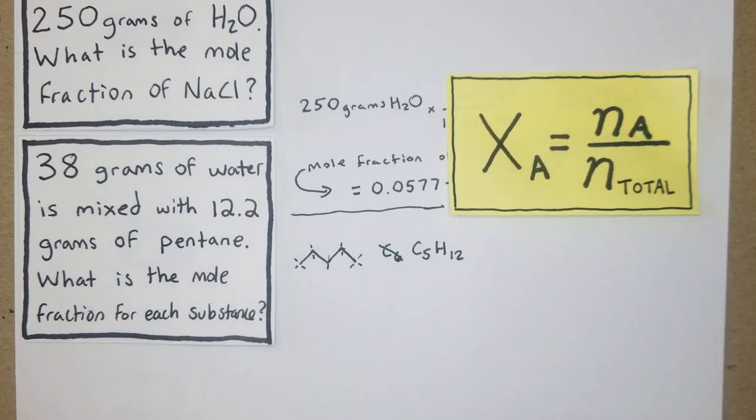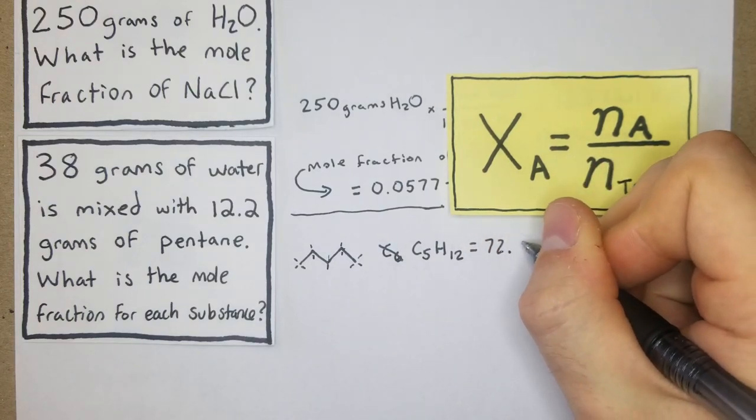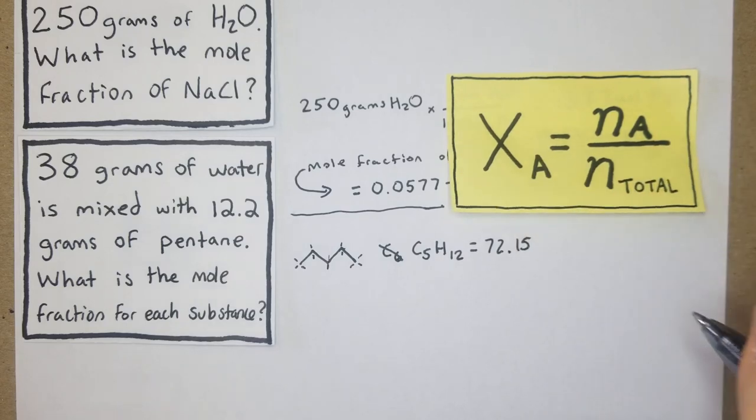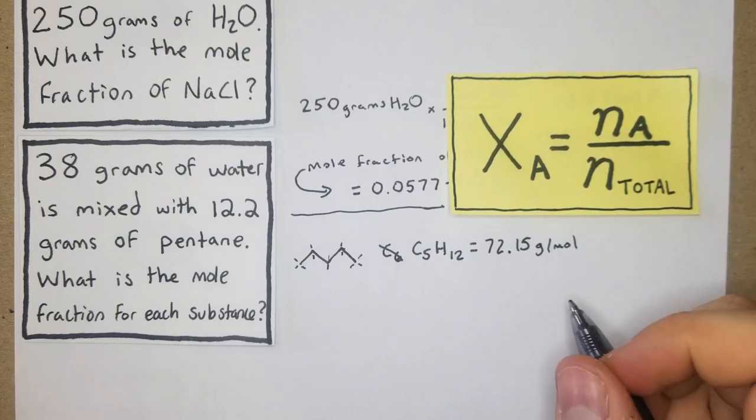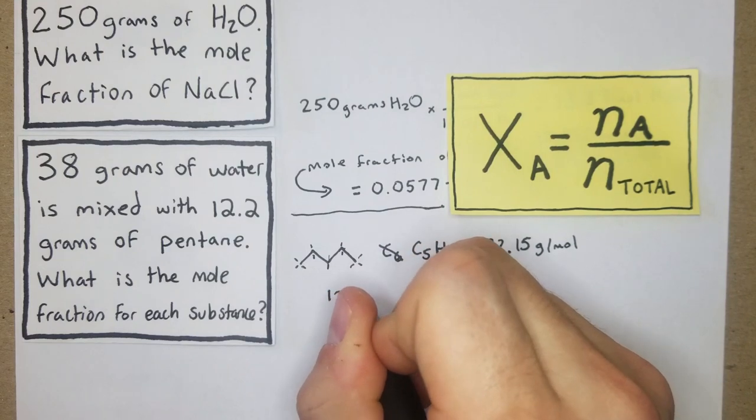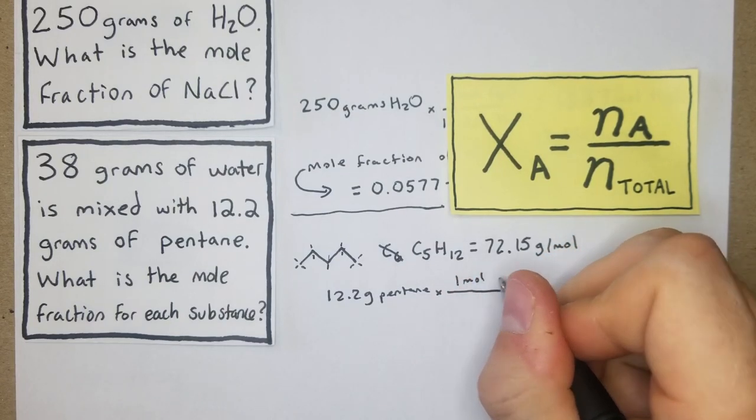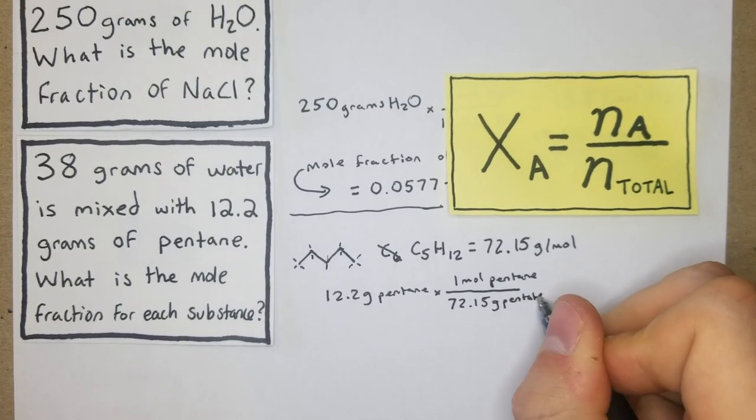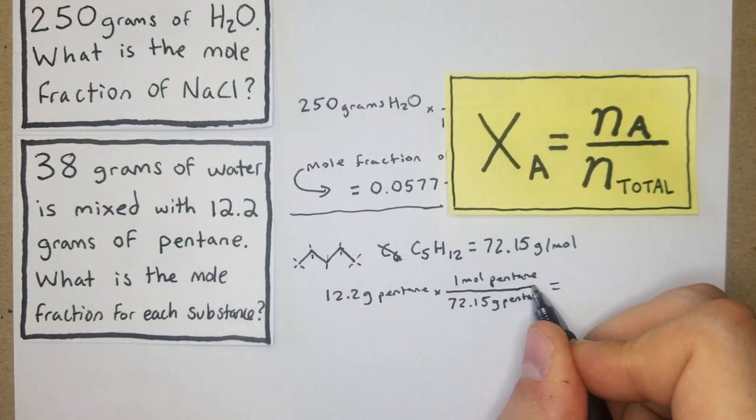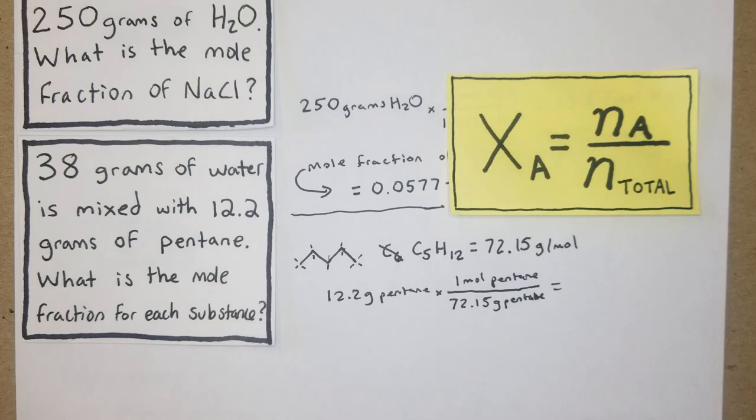We're looking for the molar mass, and in this case that's going to be 72.15 grams per mole. We have 12.2 grams of pentane times one mole of pentane over 72.15 grams of pentane. So grams will cancel, and we divide 12.2 by 72.15, and we get 0.169 moles of pentane.